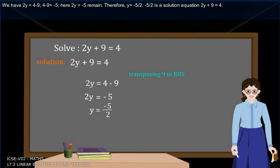Therefore, y = -5/2. -5/2 is hence the solution for the equation 2y + 9 = 4.